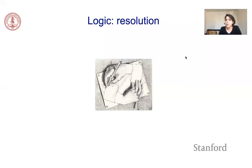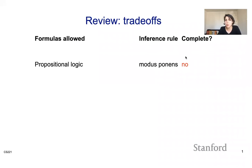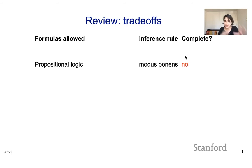In this module, we are going to be talking about resolution, which is an inference rule. So far, we've been talking about propositional logic — the syntax and semantics of propositional logic — and we discussed one inference rule, specifically modus ponens. The idea of an inference rule is: can we do manipulation of syntax in the syntactic land over formulas in order to derive, in order to prove, a new formula?